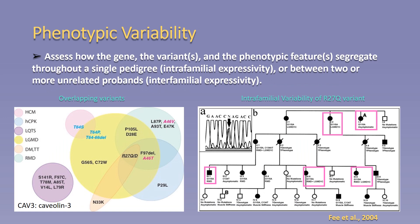The third criteria is phenotypic variability. Curators should assess how the gene, the variants in the gene, and the phenotypic features segregate between related and unrelated carriers. For the example shown, we can observe for the gene CAV3 that five of the six disease entities asserted for the gene have overlapping variants, indicating no difference in molecular mechanism, as observed by the figure on the left.